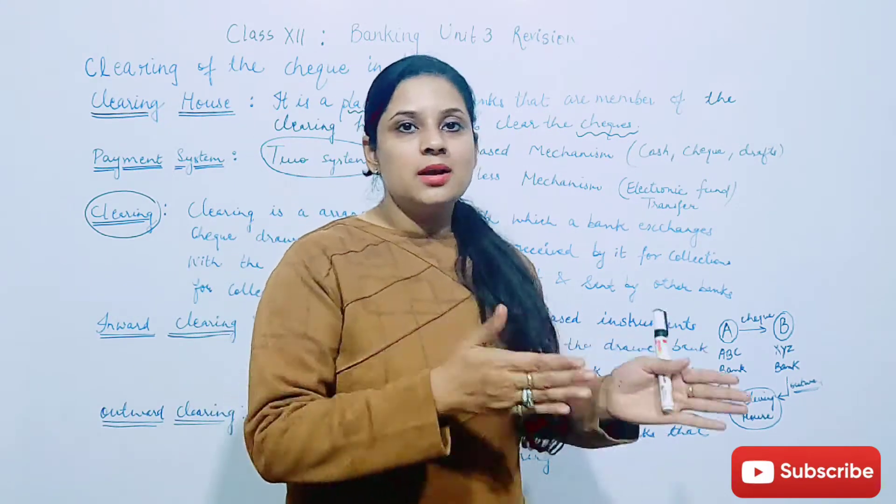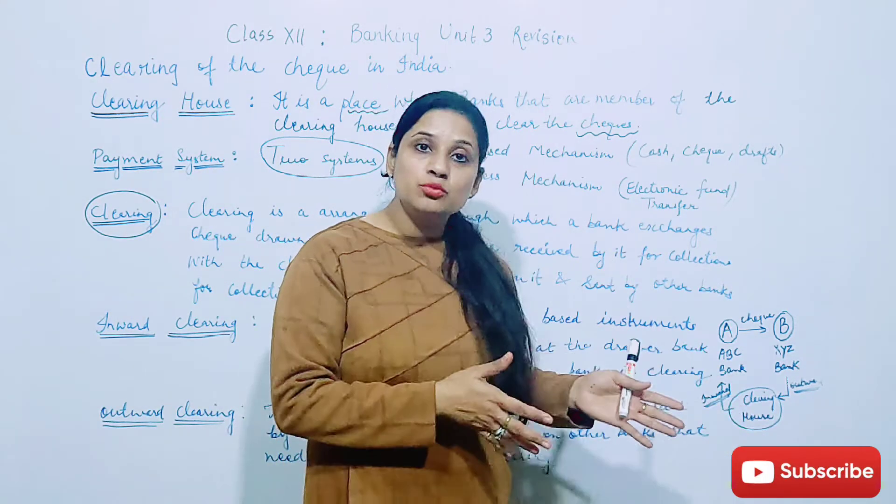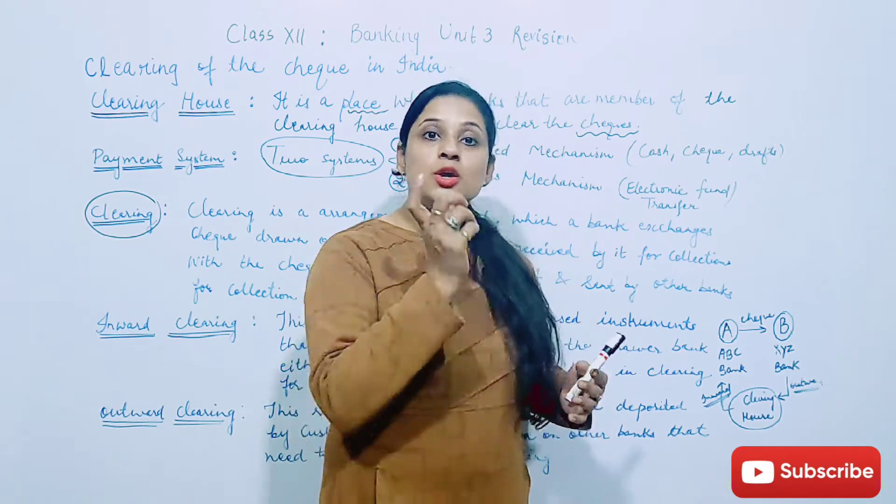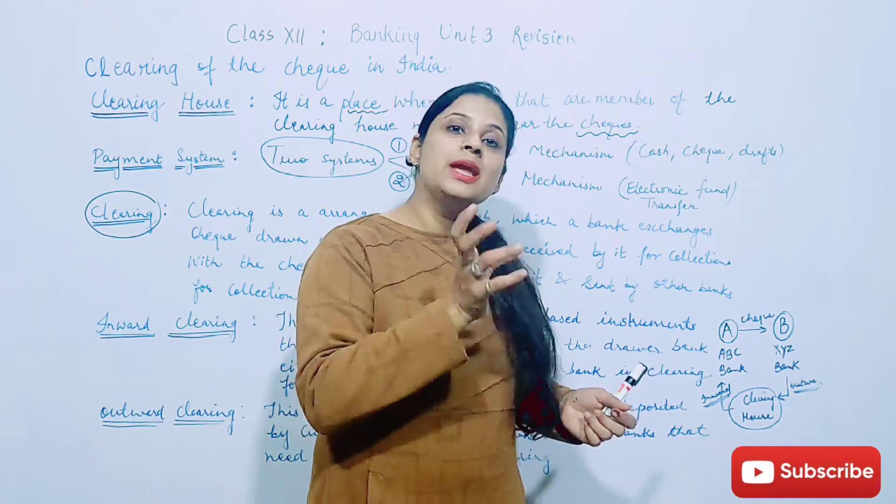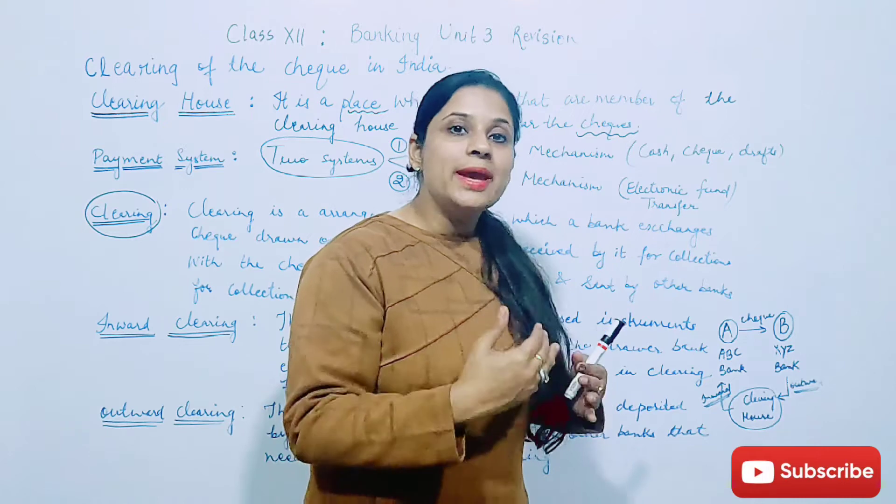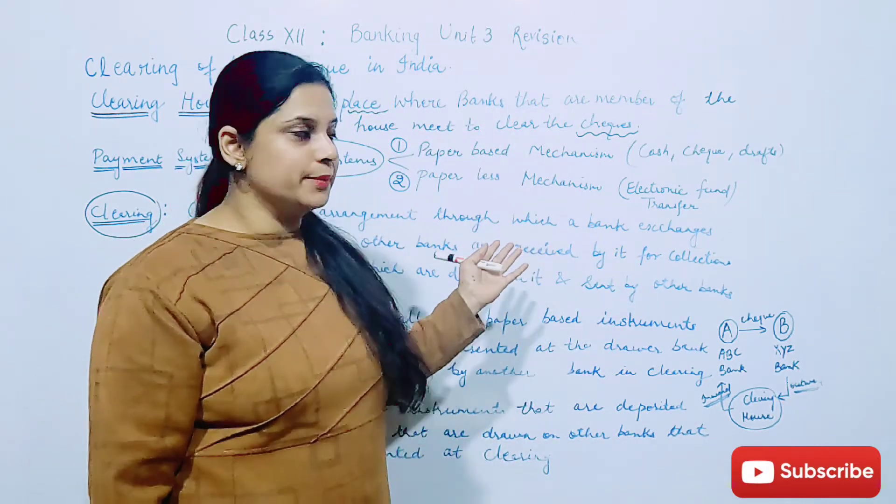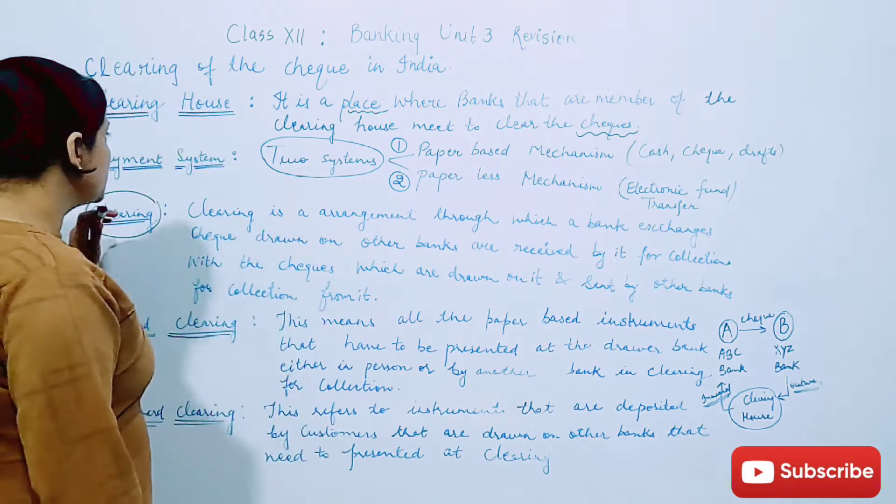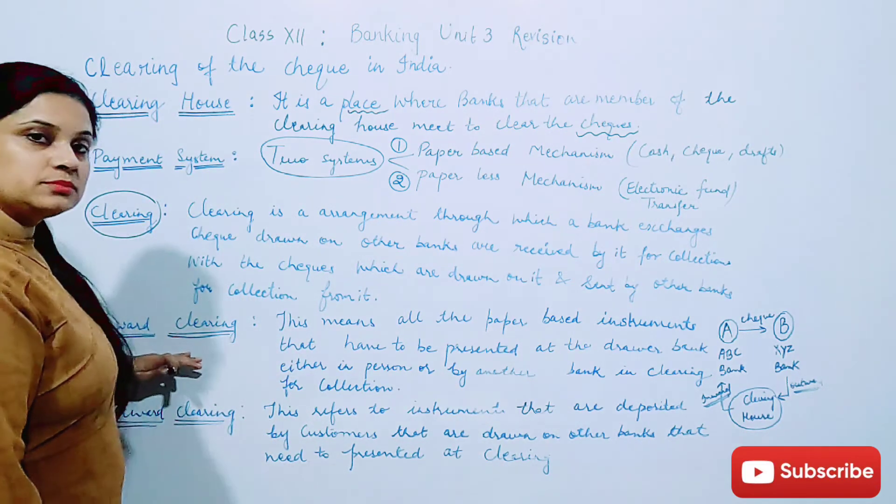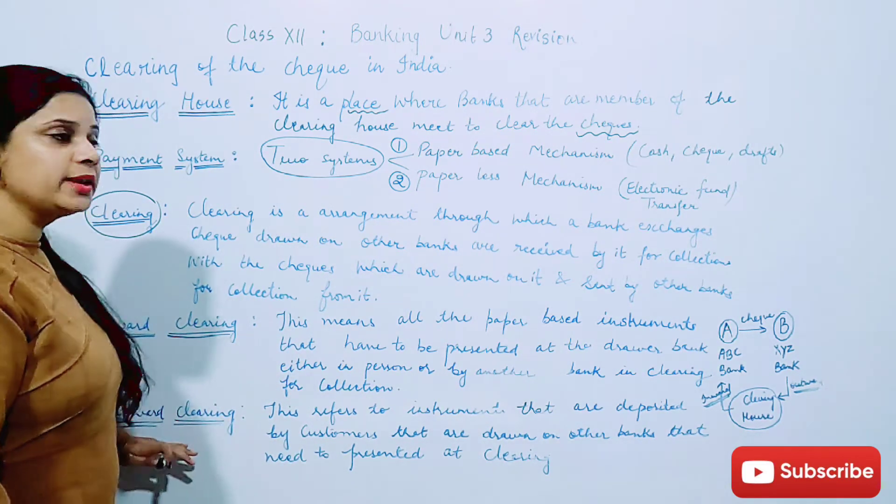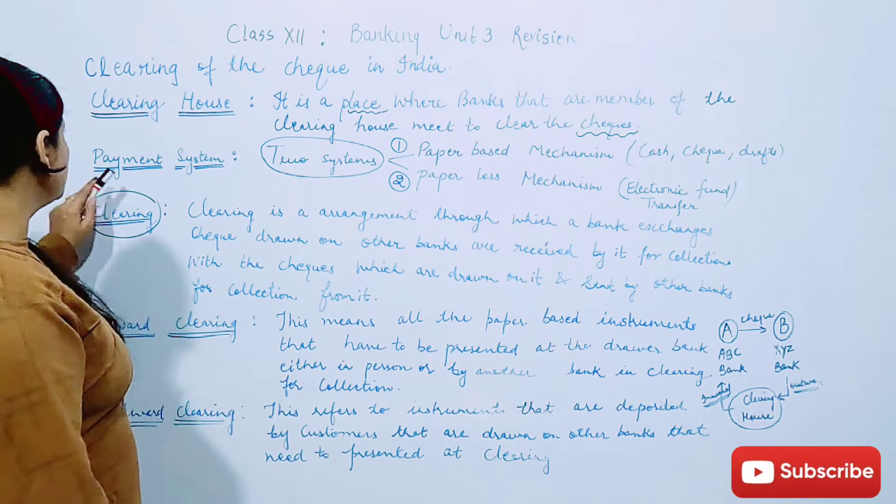So whenever check ka transaction, check ke through transaction aur check ka exchange ho ga do banks ke beech mein ya phir ek hi bank ka check ho, then that is called clearing. Woh arrangement ko hum bolte hai clearing. Ab isme bhi aapke do parts hai: number one is inward clearing and number two is outward clearing.